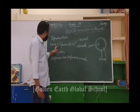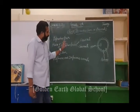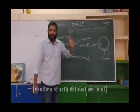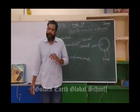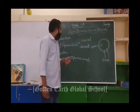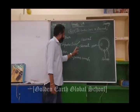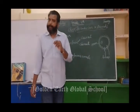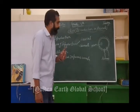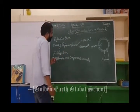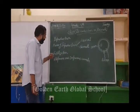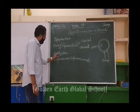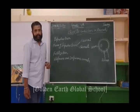So we categorize reproduction into two categories: asexual reproduction, in which only one parent is required, and sexual reproduction, in which there is one male and one female parent. After that, there is another topic and it's called fertilization.